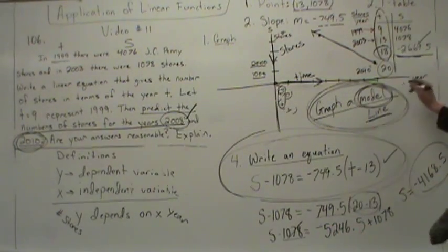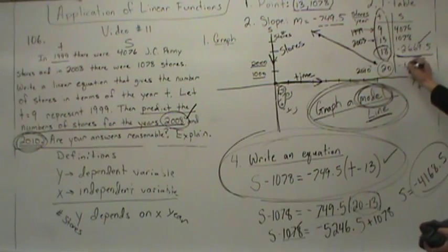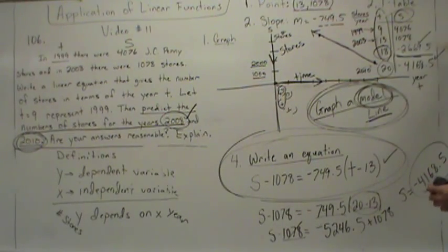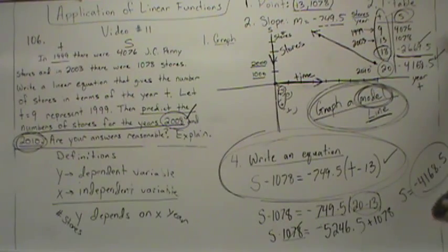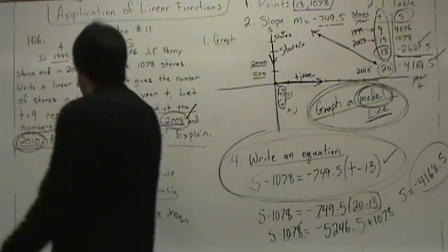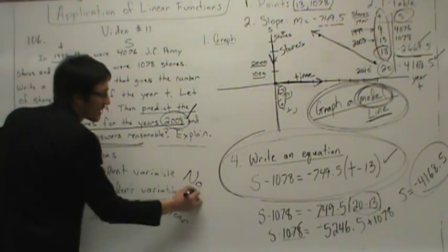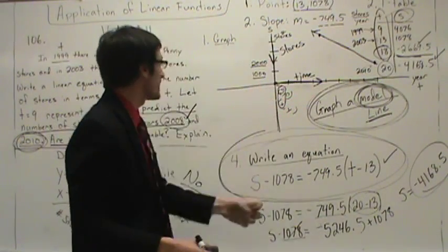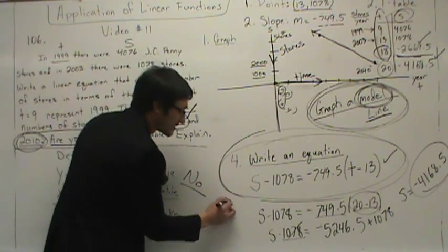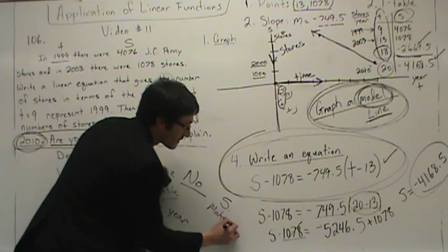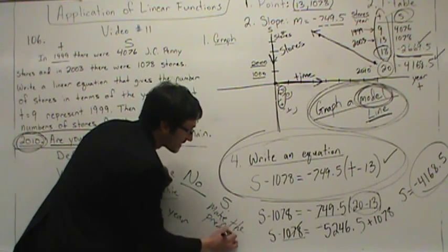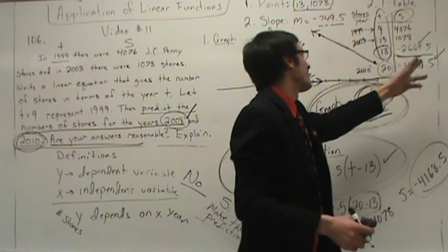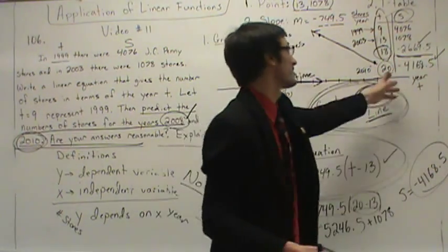At year 2010 we're predicting negative 4,168.5 stores. Does this make sense? No — we cannot have a negative number of stores. It does not make sense. Are your answers reasonable? No, the answers are not reasonable. The predictions are: negative 2,669.5 stores in 2008 and negative 4,168.5 stores in 2010. Basically: there won't be any stores left by 2008 or 2010 based on this trend.